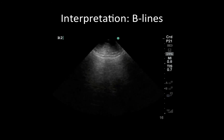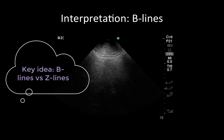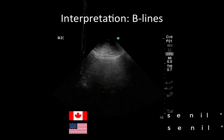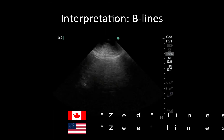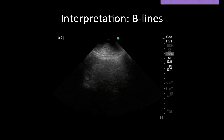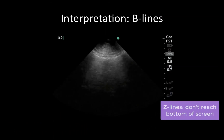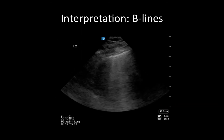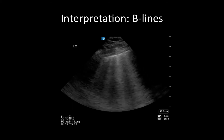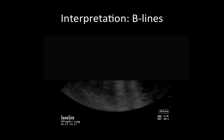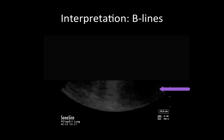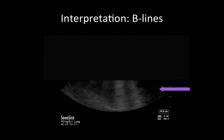Next, in the interpretation of B-lines, one common mistake is to confuse B-lines with Z-lines. Z-lines, as shown here, are vertical artifacts that emanate from the pleura but do not travel the entire depth of the screen. Their exact physiologic correlate is unknown, but they are not pathological findings and should not be mistaken for B-lines. If you're ever unsure as to whether you're visualizing B-lines or Z-lines, increase your depth and focus your attention on the bottom part of your image to see if the vertical artifacts do in fact extend the entire depth of the screen.